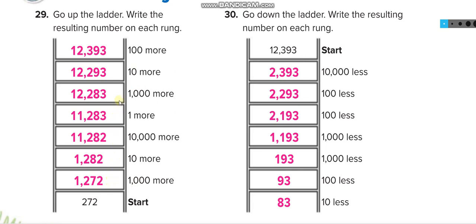First you add 1,000, then 10, then 10, then 100, then 100, then 100 more and 100 more. Here you start from the top, you will subtract now. Here you are adding, now you will subtract: 10,000 less, then 100, then 100, then 1,000 less, then 1,000, then 100, and then 10 less.